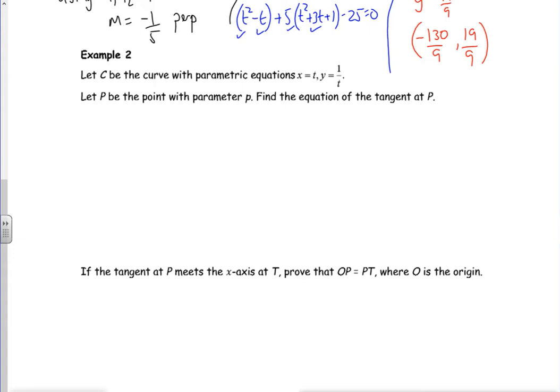Right then, let's have a look at Example 2. So I've got x is t and y is 1 over t. So it says let P be the point with a parameter p. These are dodgy. You put in t as p and find the equation of a tangent at P. So it's an equation of a tangent, so I know I want a gradient. With this one I could actually just see y is 1 over x and then just do it from there, but we'll do it fully, we'll do it with the other way around.